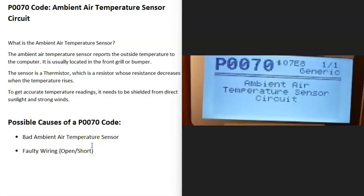Today I'm talking about a P0070 code, what it is and how you go about fixing it. So what is the P0070 code? Well, it's an ambient air temperature sensor circuit. And what does this mean?